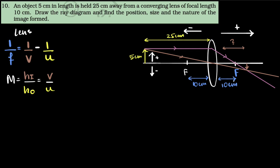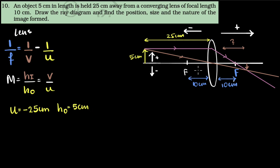With that in mind, we can write down what is given to us. Our object distance U is given as 25 centimeters, but it's on the left side of the lens, so it is negative. The height of the object is 5 centimeters and it's above the principal axis, so that's positive. We are given the focal length is 10 centimeters. From the ray diagram, the relevant focus is on the right side, so the focal length is positive: +10 centimeters.